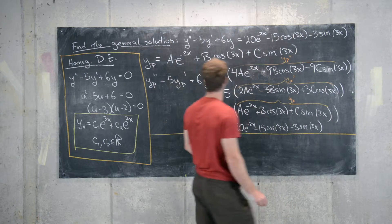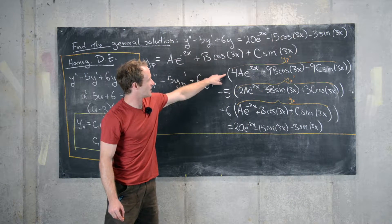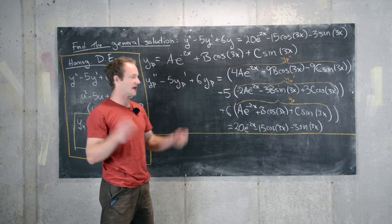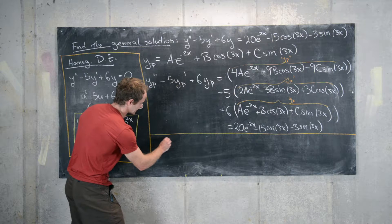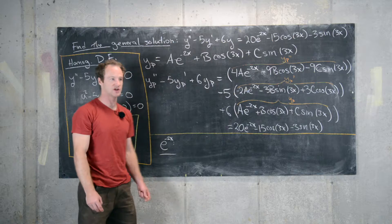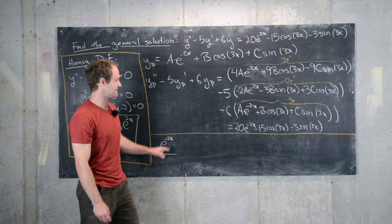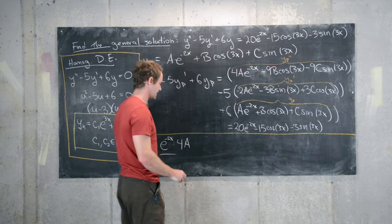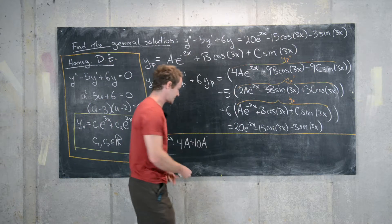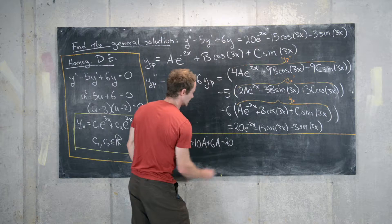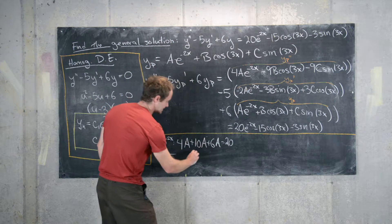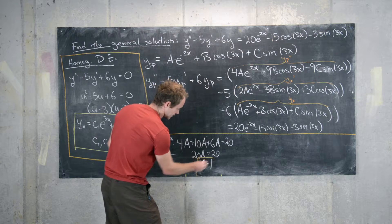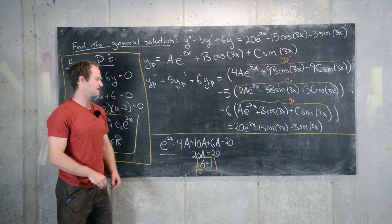We can take this equation — yp double prime minus 5yp prime plus 6yp equals the right-hand side — and equate like terms. Extracting the coefficient of e to the minus 2x: on the left we have 4a, plus negative 5 times negative 2a giving plus 10a, plus 6a, equaling 20. That simplifies to 20a equals 20, so a equals 1. The coefficient of e to the minus 2x in our solution is 1.